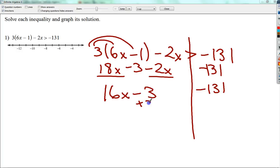I need to add 3 on both sides. And I do negative 131 plus 3. End up with negative 128. Bring down 16x.